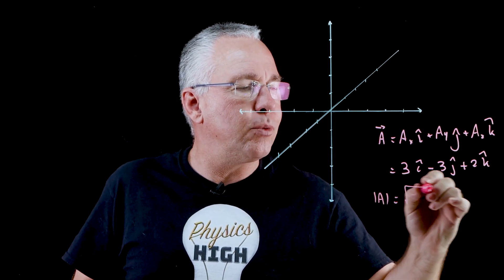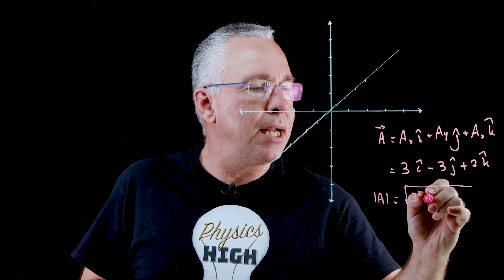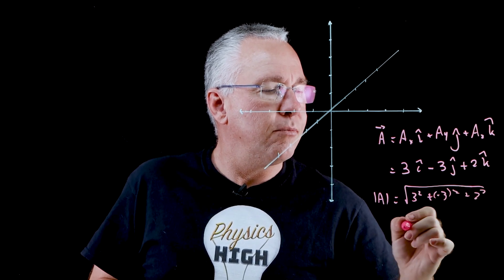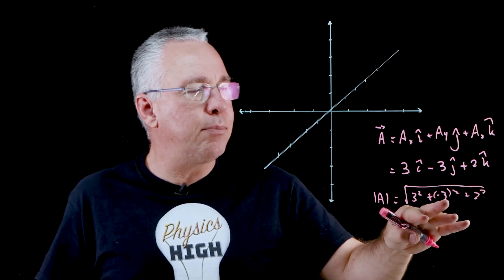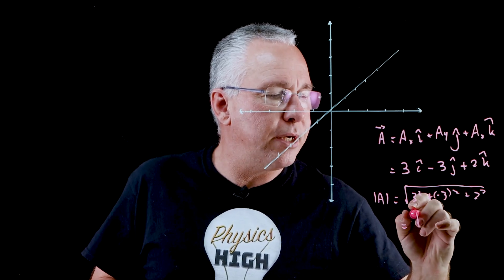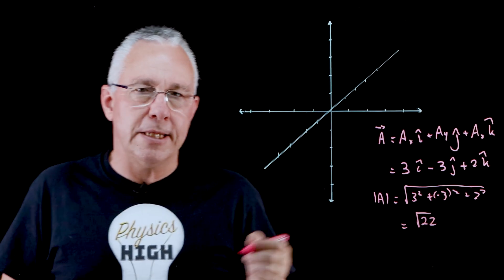And again, simply to work out the magnitude, the magnitude of that vector is simply equal to the square root of three squared plus negative three squared plus two squared, which is going to be equal to nine plus nine plus four and gives us a total of 22, so what we have is the square root of 22 in this case.